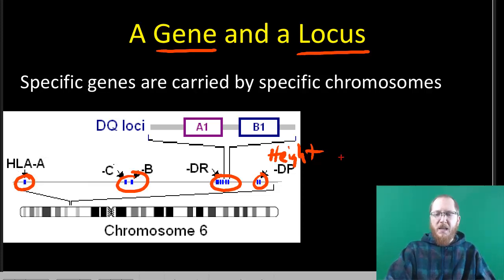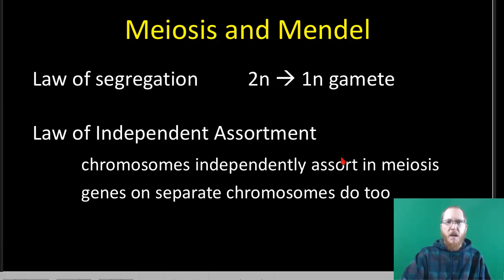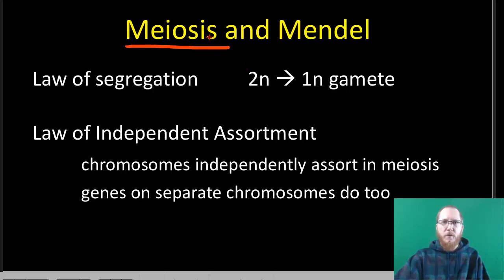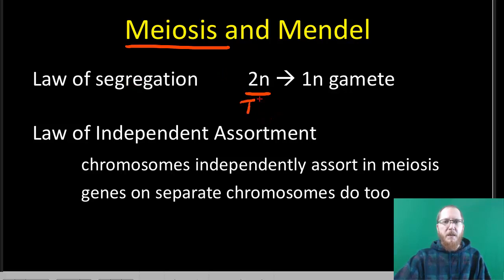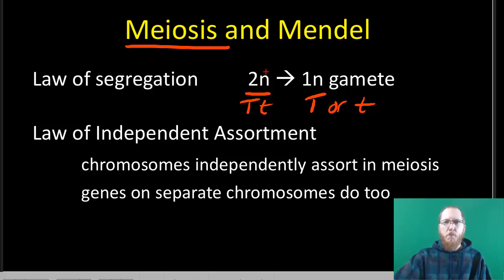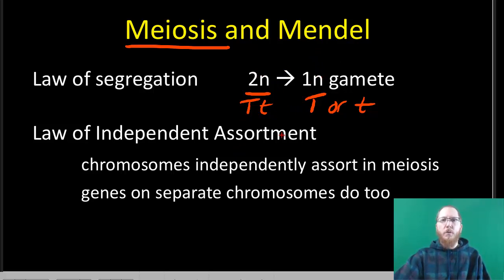Genes have specific locations on specific chromosomes — always at the same part of that chromosome. If you follow the chromosomes through meiosis, you can figure out Mendel's laws. Mendel's law of segregation says we go from two copies of everything — say big T and little t — to one. The gametes that you actually pass on to offspring will be big T or little t, not both. That's shown by meiosis, where we halve the amount of genetic material, going from two sets to one. Law of segregation — split.